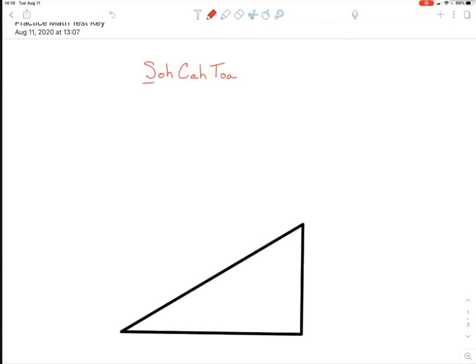Sine of some angle, we're going to call it theta, is equal to opposite over hypotenuse. And cosine of some angle theta is equal to adjacent over hypotenuse.